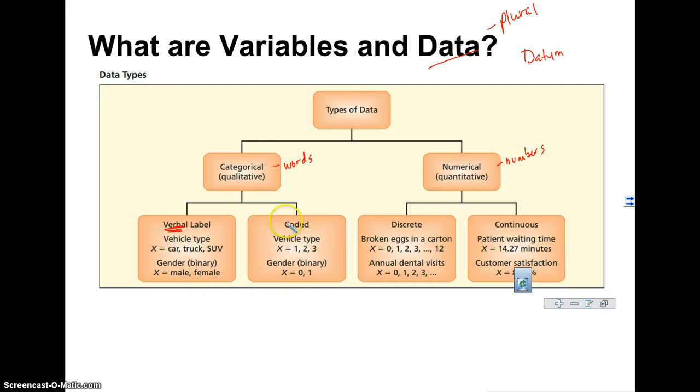Sometimes we code them. So we say like a car is a one, truck is a two, SUV is a three. But even when we do this, it's still a categorical variable. And it's very important that we know that even though these are numbers, they still represent a category. So these happen to be categories.